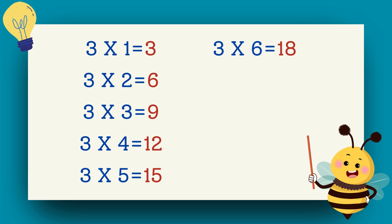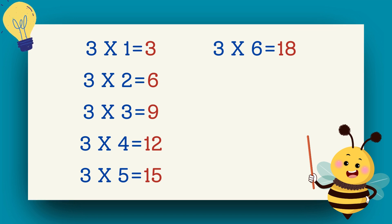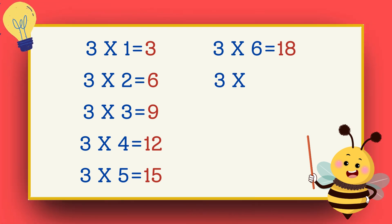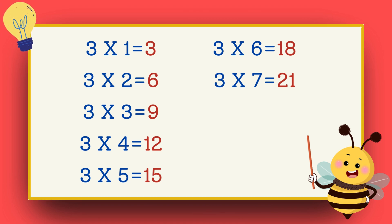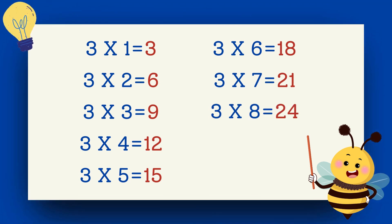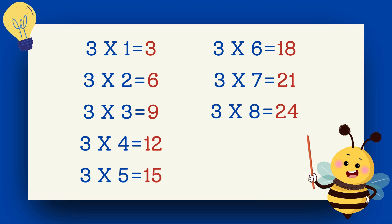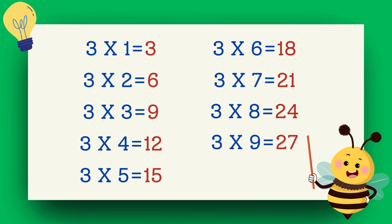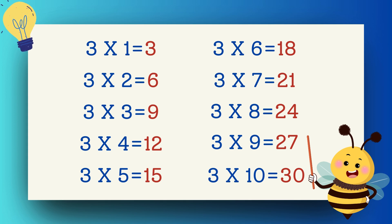Three sixes are eighteen. Three sevens are twenty-one. Three eights are twenty-four. Three nines are twenty-seven. Three tens are thirty.